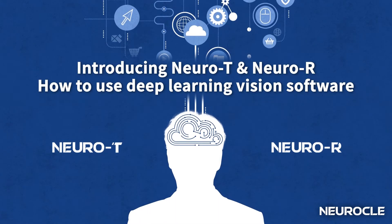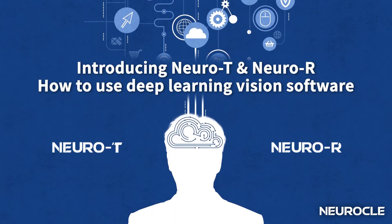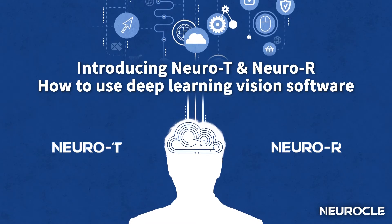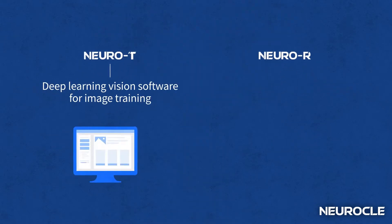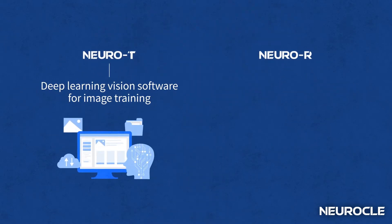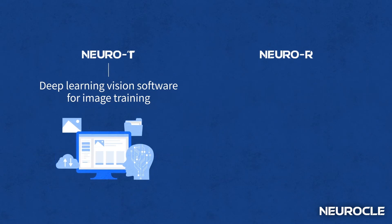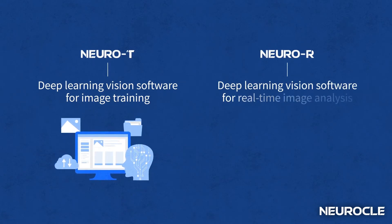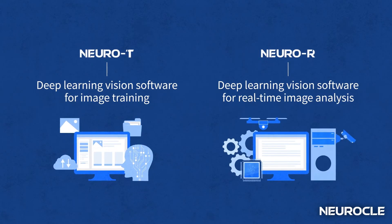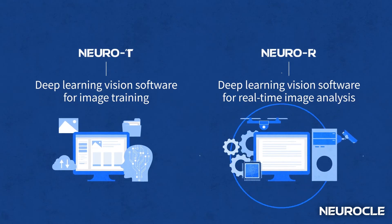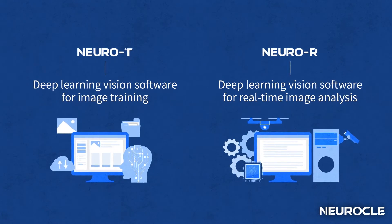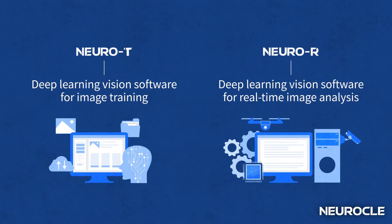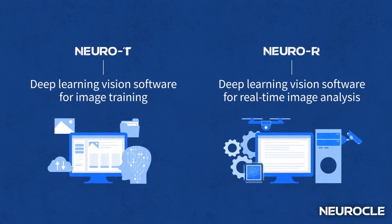NeuroT and NeuroR — anyone can create and utilize deep learning vision models with NeuroT and NeuroR. NeuroT automatically trains users' images and builds them a deep learning model. NeuroR enables users to run real-time image analysis across a variety of areas, including manufacturing, logistics, and medical field, with models customized by users themselves.